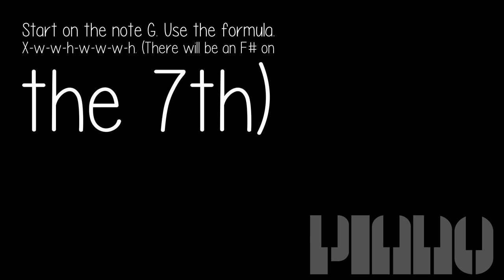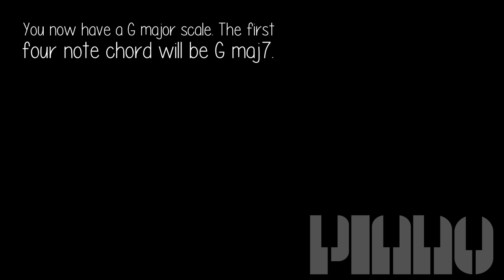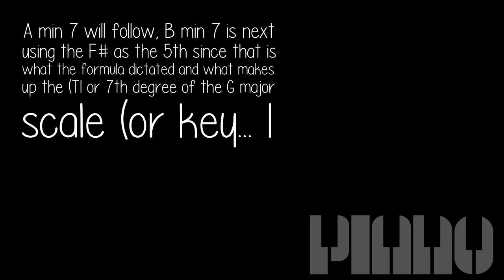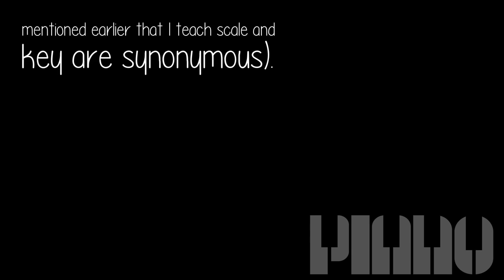Experiment: start on the note G. Use the formula X, W, W, H, W, W, W, H. There will be an F# on the 7th — you now have a G major scale. The first four-note chord will be G major 7. An A minor 7 will follow. B minor 7 is next, using the F# as the 5th, since that is what the formula dictated and what makes up the 7th degree of the G major scale or key.